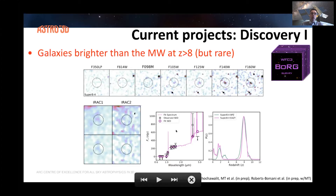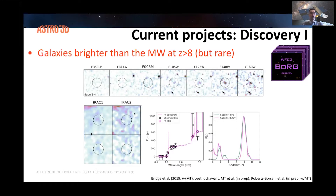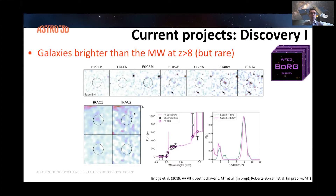Galaxies that we discover are photometric candidates from data at optical and near-infrared wavelengths. We then try to follow them up with Spitzer to get a rest-frame optical view of these sources, improve their photometric redshifts, and we also have an ongoing program to follow them up with spectroscopy, primarily using Keck MOSFIRE.